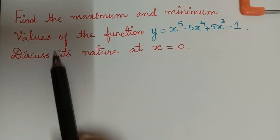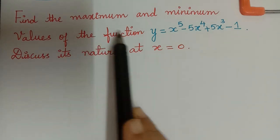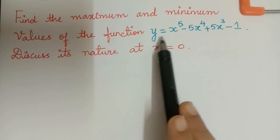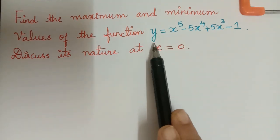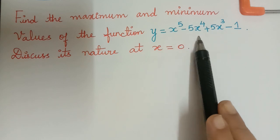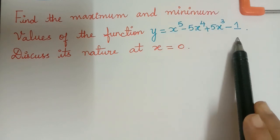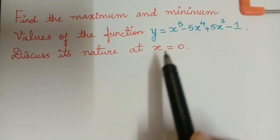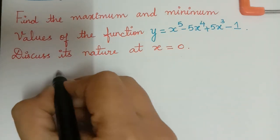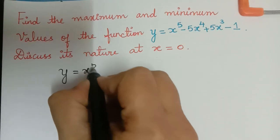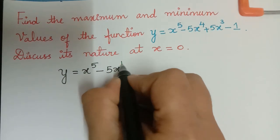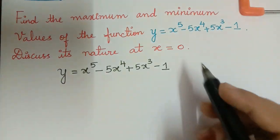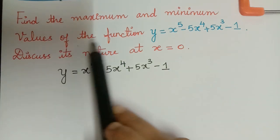Hello students. Here we have a problem on the topic maxima, minima, and points of inflection. The question is: find the maximum and minimum values of the function y = x⁵ - 5x⁴ + 5x³ - 1, and discuss its nature at x = 0. We have been given this function y, and we have to find its maximum and minimum values.